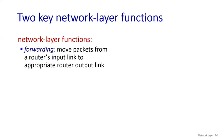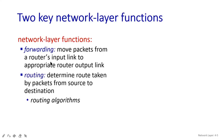Here we have the two key network layer functions. It is very important - you have to remember the meaning of how you are going to utilize the network layer functions. The first one is forwarding. In forwarding, you are going to move the packets from the router's input link to the router's output link. Just imagine there is only one router - one side will be the input link and the other side will be the output link - and it will move the packets from the input link to the output link.